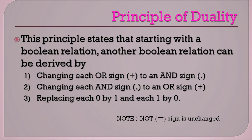Zero will become one and one will become zero. Now only one thing does not change — that is the NOT operator. The NOT sign will not change. A bar or a complement will remain the same. If you have a NOT sign, it won't change; it will stay the same. So this is the principle of duality.